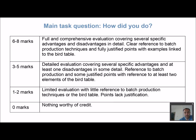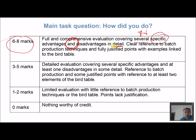Now here's what the exam board would be looking for. To reach the top mark boundary of eight marks, your answer should cover several — say four or more — specific advantages and disadvantages, presented in detail using the PEE model. There should be clear reference to batch production techniques, fully justified points, and examples linked specifically to the bird table — referring to components like the struts, the roof, or other labeled parts.